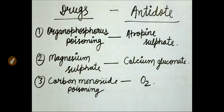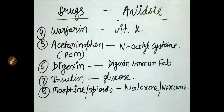Antidotes are the drugs that are used in case of drug poisoning. In organophosphorus poisoning, we need atropine sulfate to correct it. Magnesium sulfate poisoning — calcium gluconate. Carbon monoxide poisoning — oxygen. Warfarin antidote is vitamin K. Acetaminophen or paracetamol poisoning antidote — N-acetylcysteine. Digoxin antidote — digoxin immune Fab.